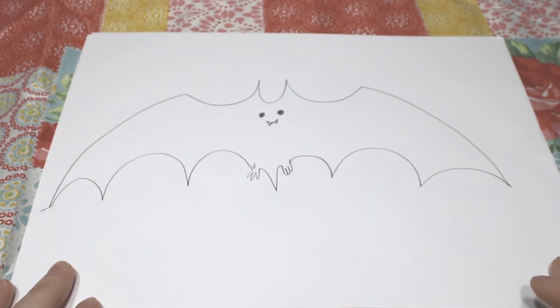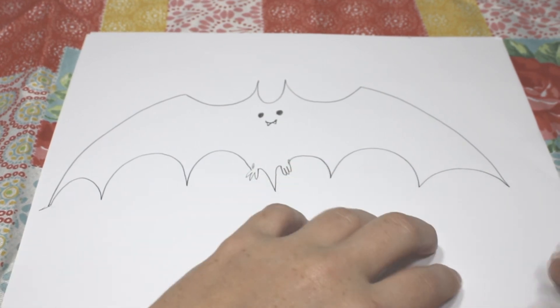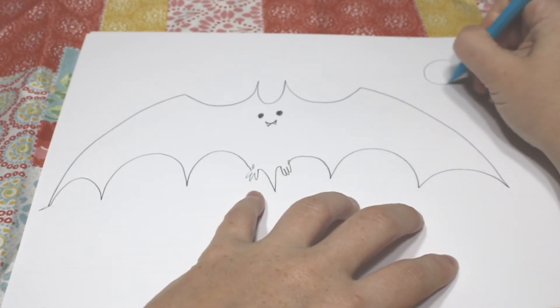Okay, and then to make our bat make a little more sense, let's add some background. Up here, we'll put a moon.